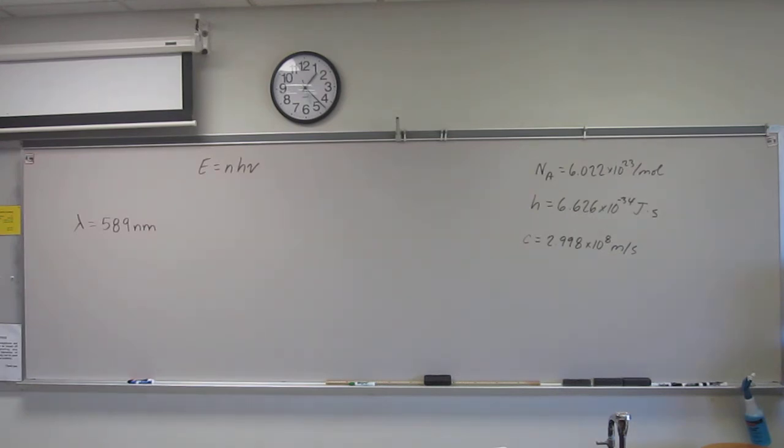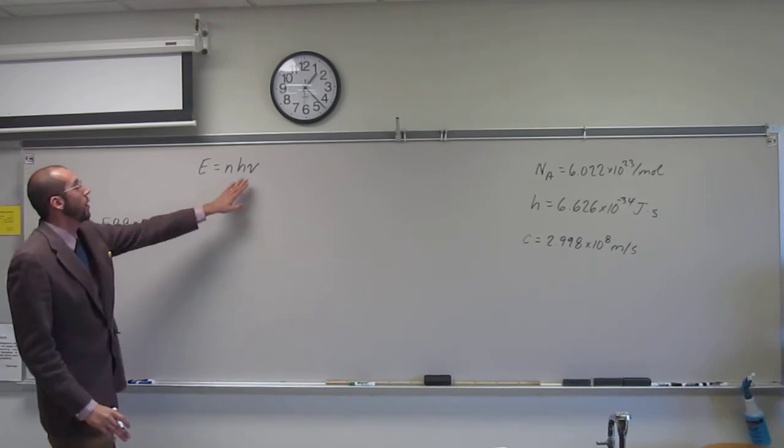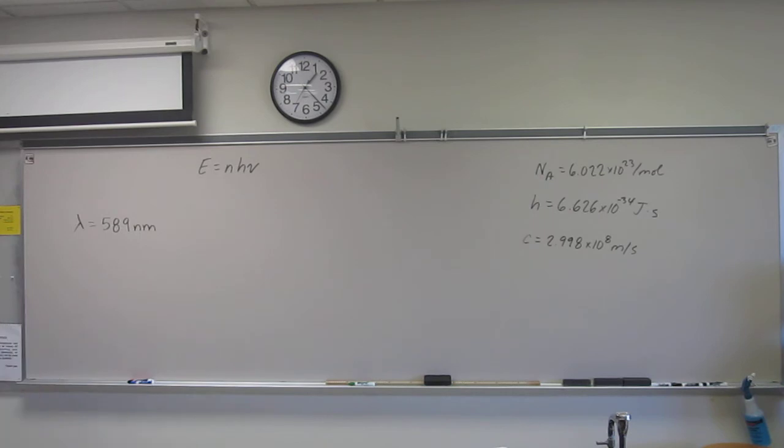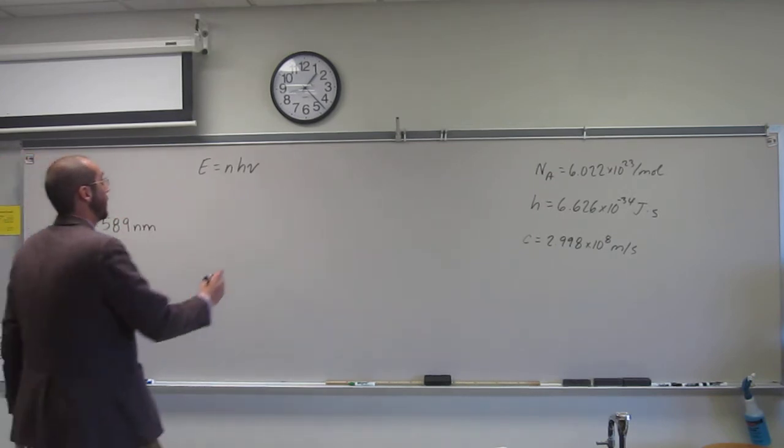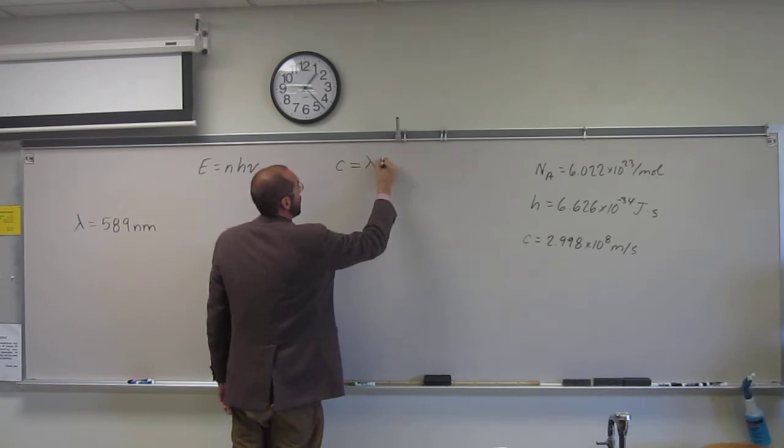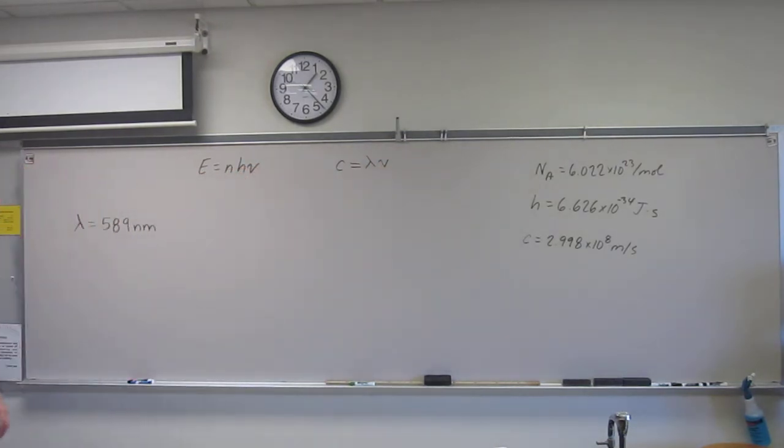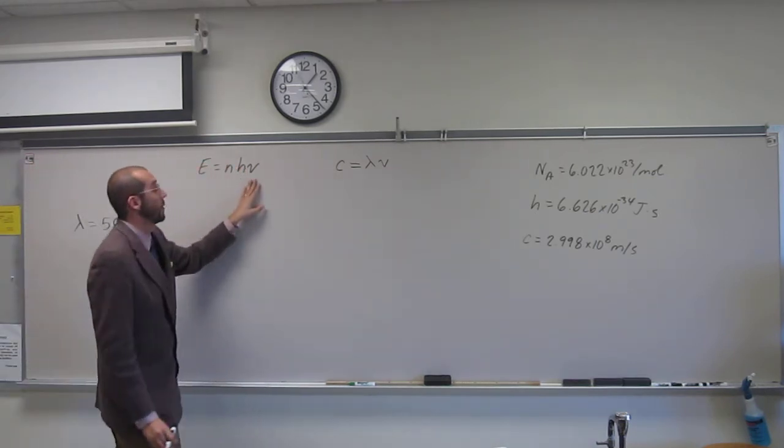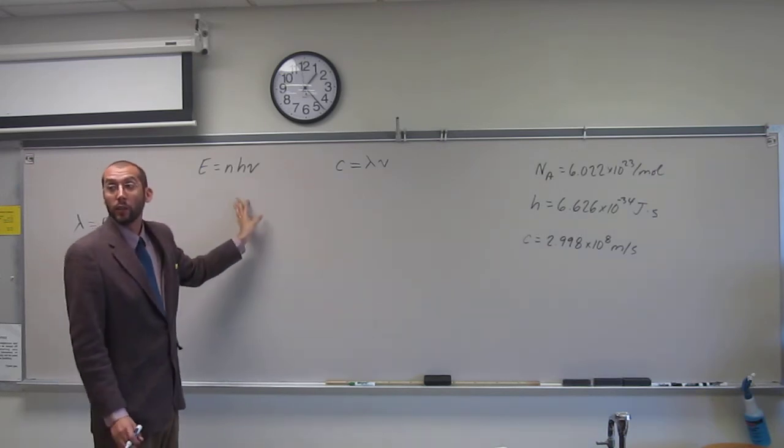So remember that we don't have ν or energy given to us, so we're going to have to figure one of those things out. We have wavelength given to us, and if we recall the speed of light equation, which says speed of light equals lambda times ν, or wavelength times frequency, we should be able to take this equation, rearrange it for frequency, and plug it into this equation here.